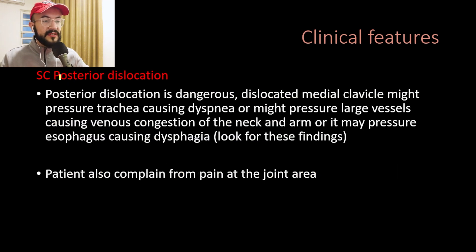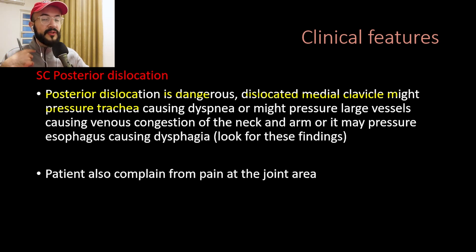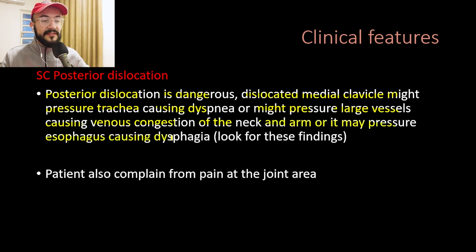Regarding the clinical features of posterior dislocations: posterior SC joint dislocation is dangerous because the dislocated medial clavicle might compress the trachea, which lies behind the clavicle, causing dyspnea. It might also compress the large vessels behind the clavicle causing venous congestion at the neck and arm, or it may compress the esophagus causing dysphagia. Look for these findings in patients complaining of pain at the SC joint to exclude posterior dislocation. The patient also complains of pain at the joint area.